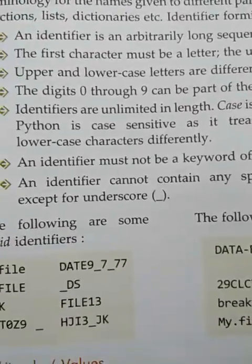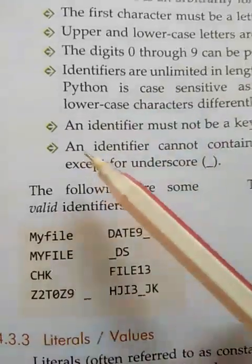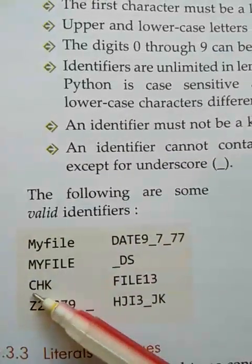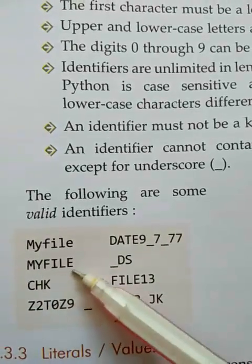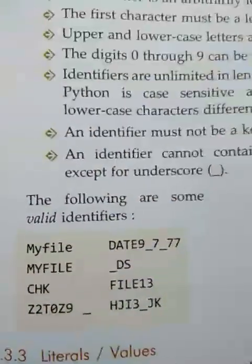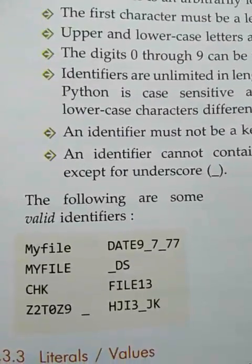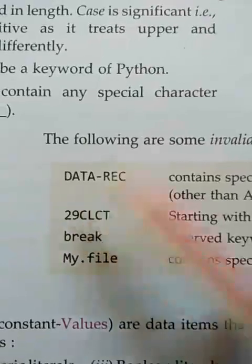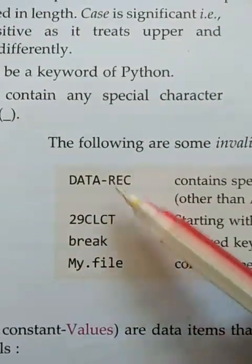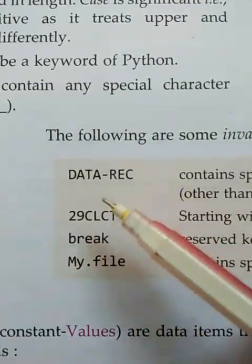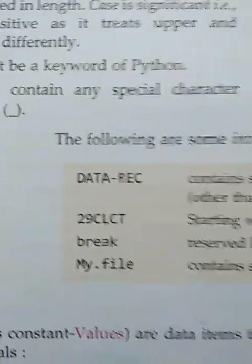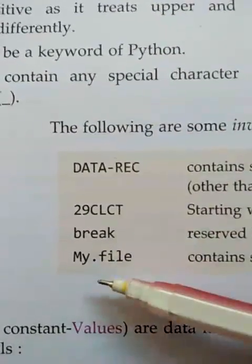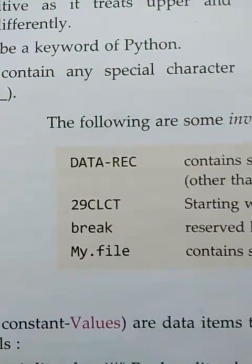Uppercase and lowercase names are treated as different identifiers since Python is a case-sensitive language. For example, 'myfile' and 'MyFile' are two different identifiers. These are some invalid identifiers: 'rec-record' is invalid because minus is not allowed; '1name' is invalid because it starts with a number; 'break' is invalid because it is a keyword; and 'my.name' is invalid because special symbols like dot are not allowed.